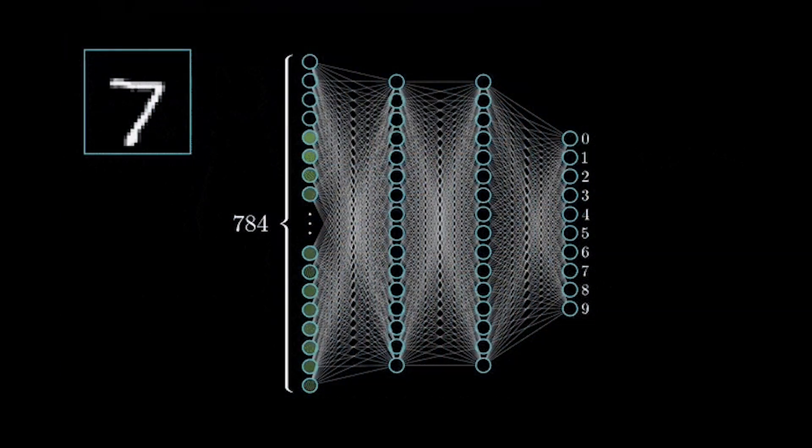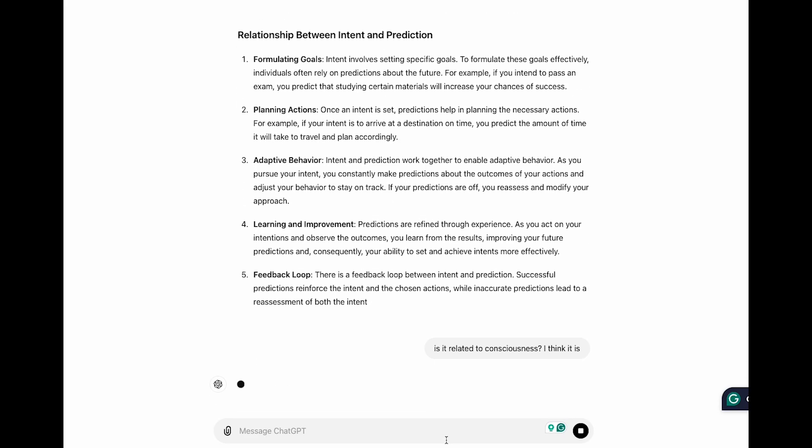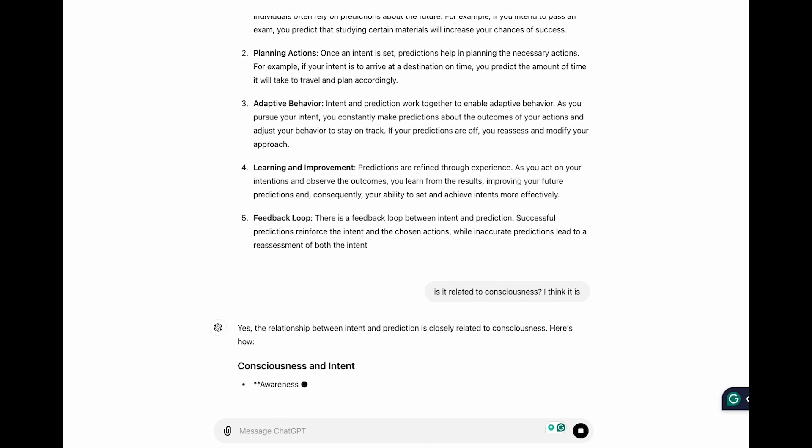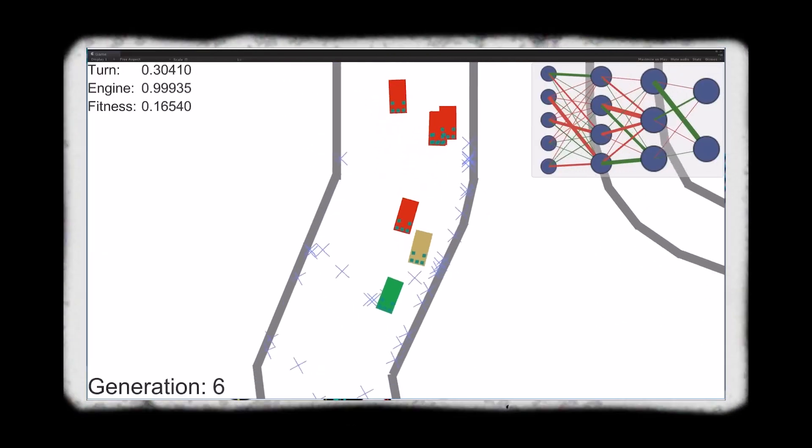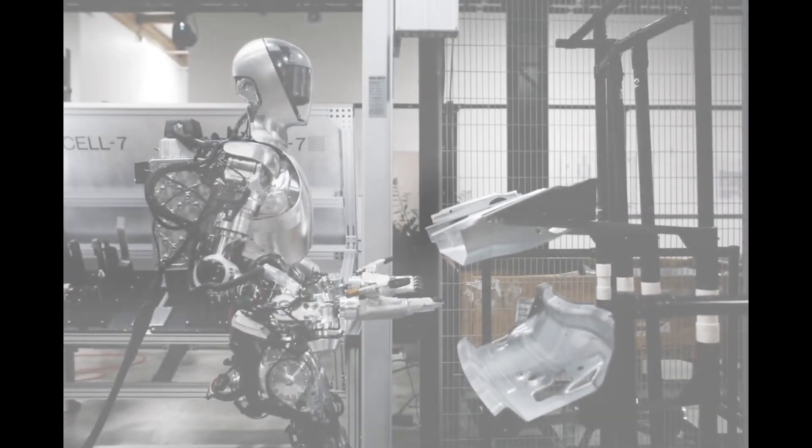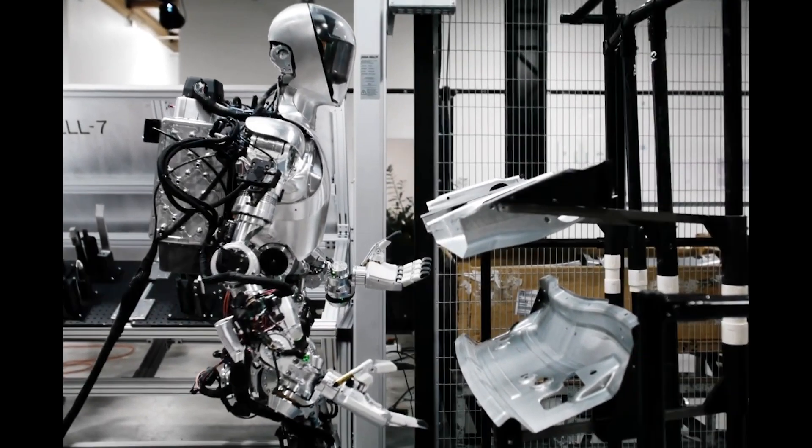But the main one is because prediction in AI models is dependent on us. We have to tell it what to do or what we want. It can't think about what it wants for itself. And so if prediction was the first form of conscious intent, and AI models can predict but still aren't conscious, why do I say imagination is the key to consciousness in AI?